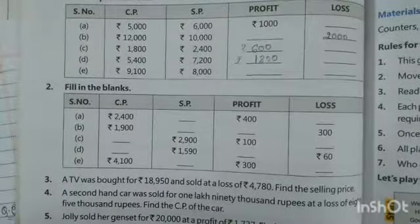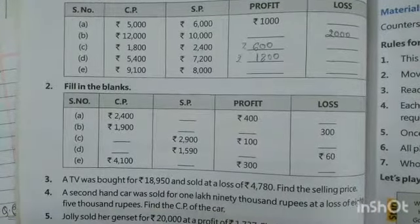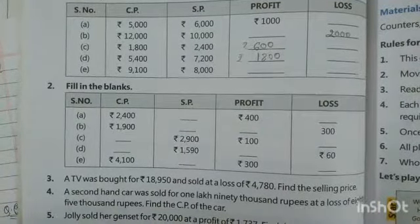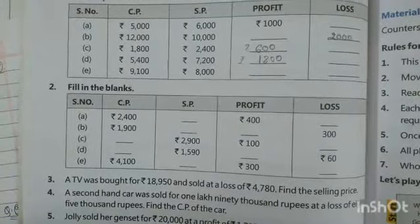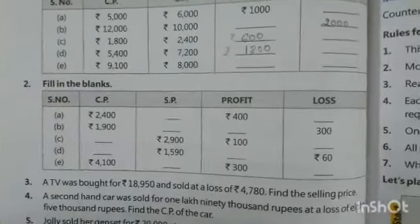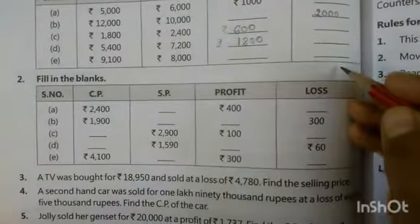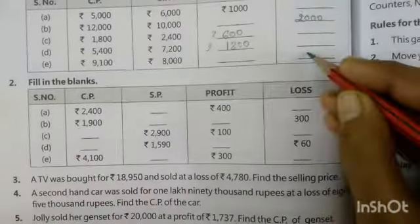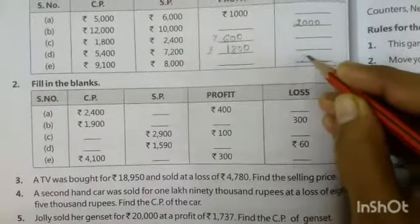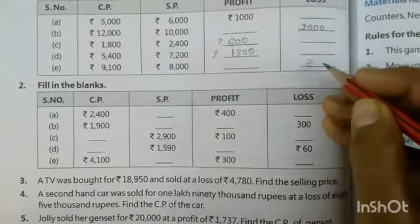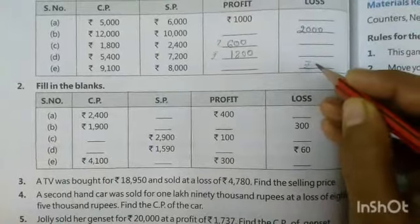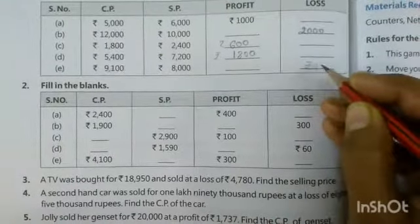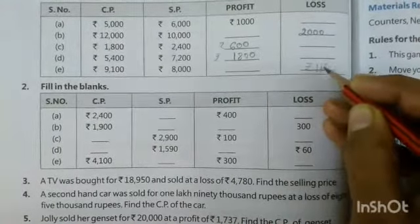Cost price is 9,100 and sell price is 8,000. So the cost price is greater, which means there is a loss of rupees 1,100.